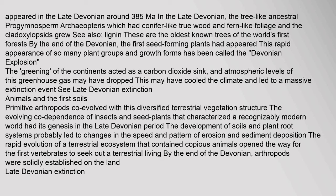The greening of the continents acted as a carbon dioxide sink, and atmospheric levels of this greenhouse gas may have dropped. This may have cooled the climate and led to a massive extinction event. Primitive arthropods co-evolved with this diversified terrestrial vegetation structure. The evolving co-dependence of insects and seed plants that characterized a recognizably modern world had its genesis in the late Devonian period. The development of soils and plant-root systems probably led to changes in the speed and pattern of erosion and sediment deposition. By the end of the Devonian, arthropods were solidly established on the land.